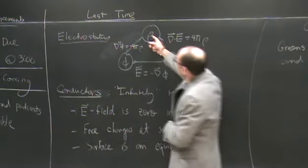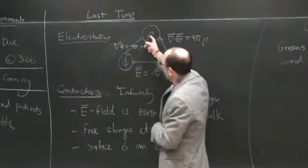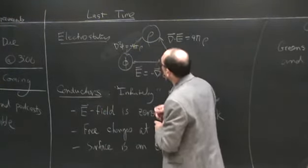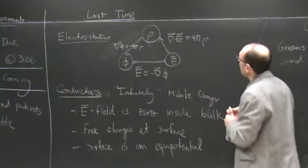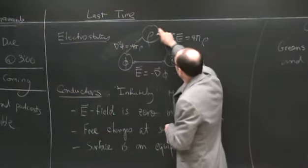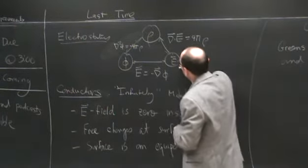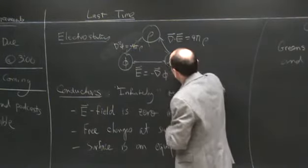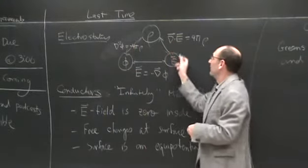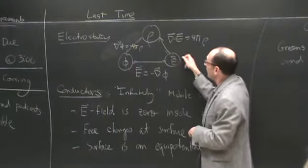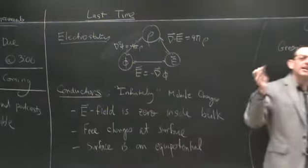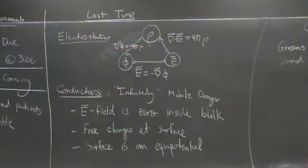As we discussed, there is a general formal solution that relates the charge distribution to the potential. But depending upon the symmetry of the problem, you might want to approach the problem through the back door — first using Gauss's law to get the field, and then using the integral of the field to get the potential. Or if you can't use Gauss's law, you would find the potential and use the gradient to get the field.